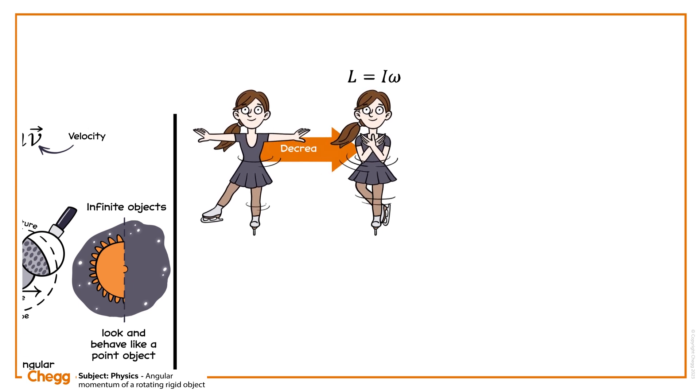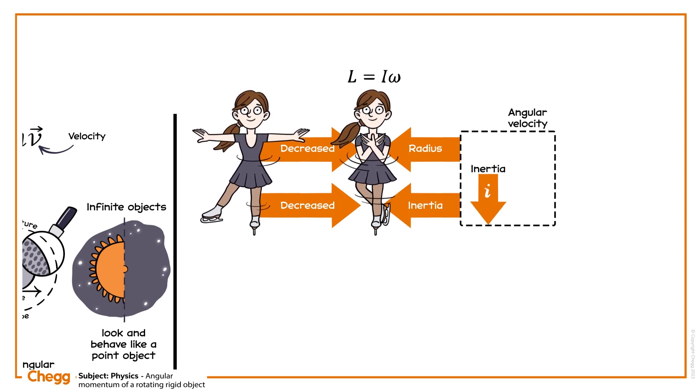When the skater brings in her arms, she effectively decreases her radius, thus decreases her moment of inertia. Because I is smaller, the angular velocity must increase to keep the angular momentum constant.